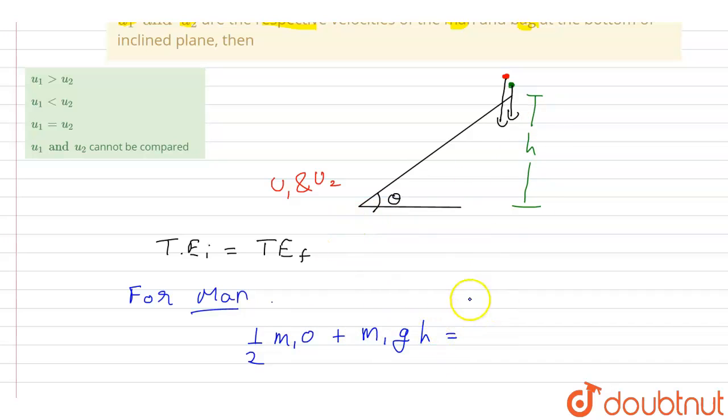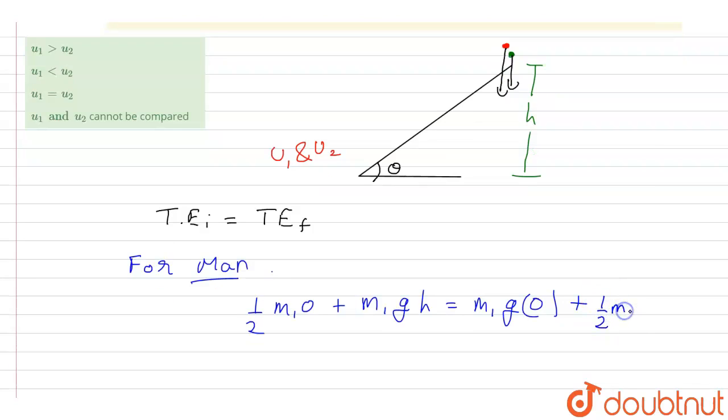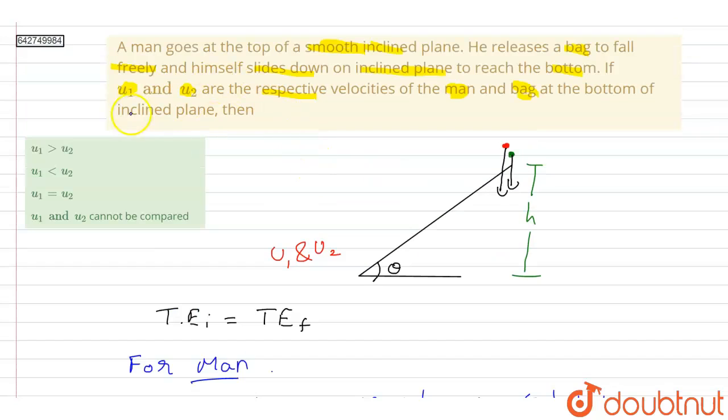the final velocity. Now at this point height will be zero, that means m1 g h will be zero at the final point, but the kinetic energy will be half m1, the final velocity of the man is u1.